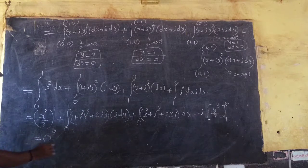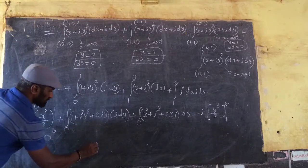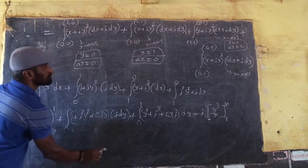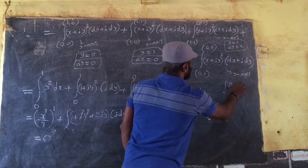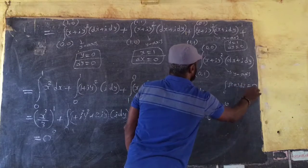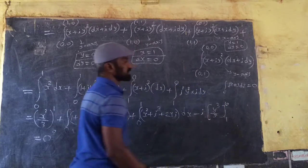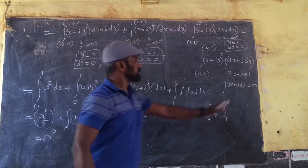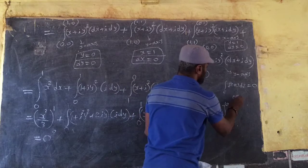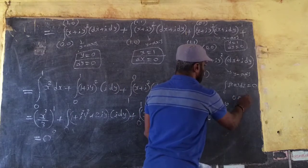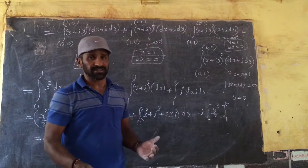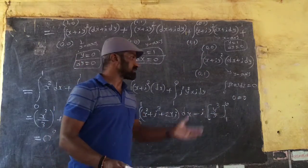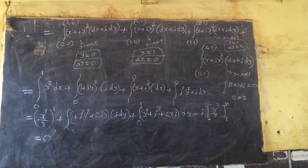So LHS part is 0 and RHS is 0. Integration of C, f(z) dz equals 0 — that is Cauchy theorem. LHS = 0 = RHS. It shows that we verify Cauchy theorem. It's simple. Thank you.